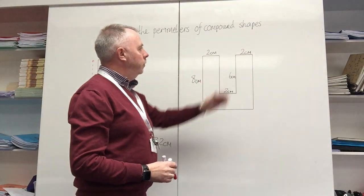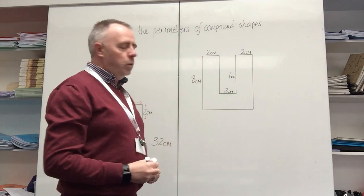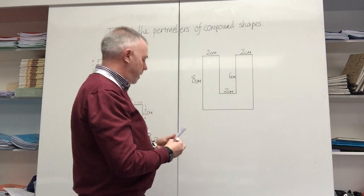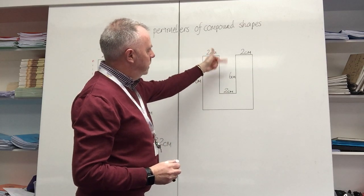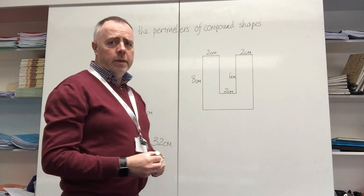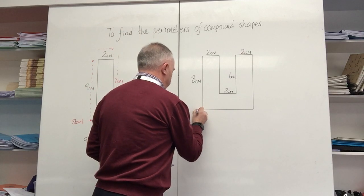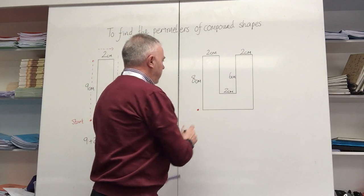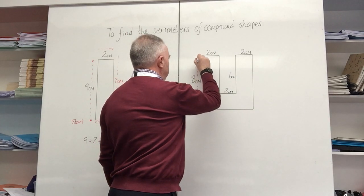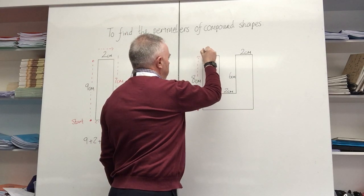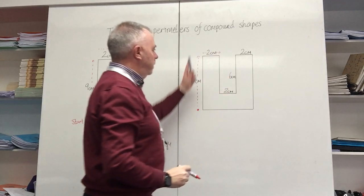If we move on to this second shape, which is a U shape, you can see here that I've got 8 centimeters, 2 centimeters, 2, 6, and 2 which I'm already given. I'll choose my starting point in this bottom corner again — I've got the first vertical measurement of 8 centimeters, then 2 centimeters, so I know those two.